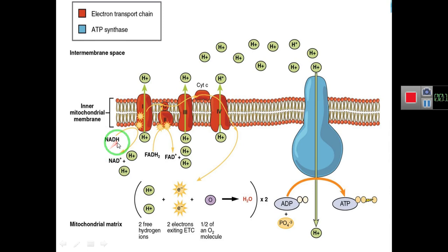The charged Complex 1 uses the energy from the electron to pump protons out from the mitochondrial matrix to the inter-membrane space, creating a higher concentration of protons there. After doing this work, the electron is passed from Complex 1 to coenzyme Q. That completes the work of Complex 1.